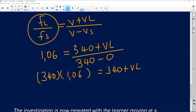Right, so here I'm getting 360. So this is 360 equal to 340 plus VL. We can take 340 to the other side.